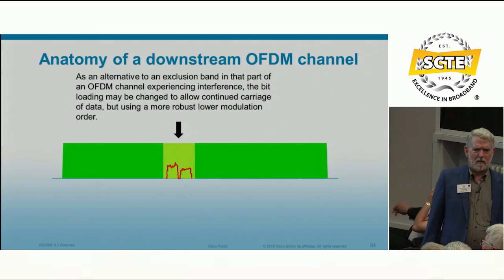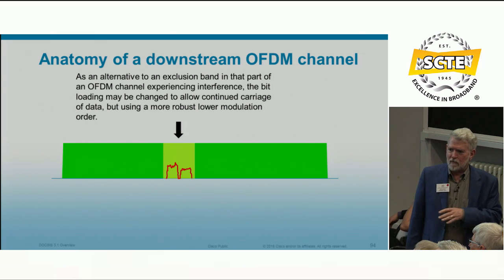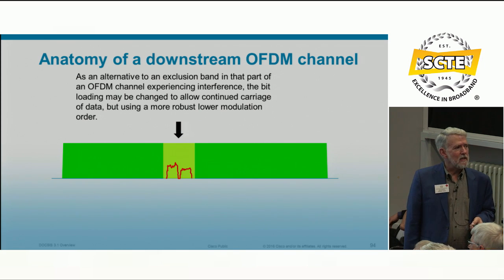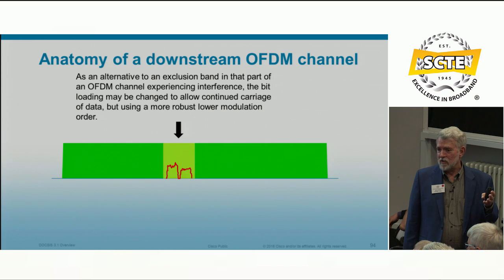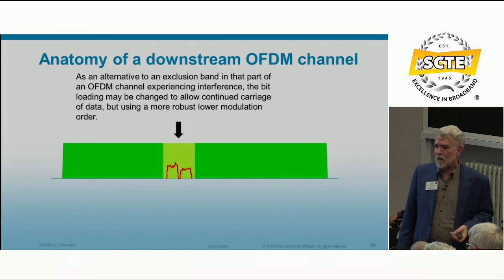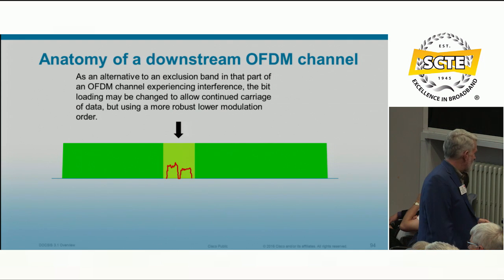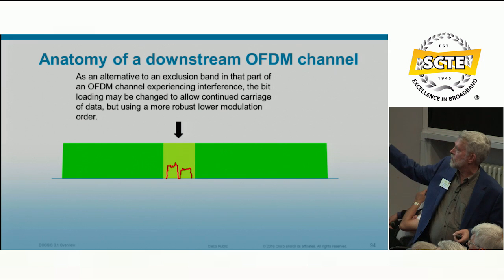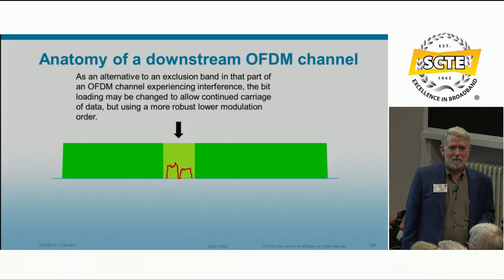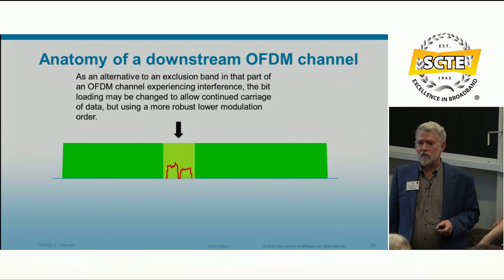Another powerful feature is bit loading — assigning different modulation orders to different groups of subcarriers. If ingress isn't severe enough to require an exclusion band, you can reduce the modulation order on the affected subcarriers — say, from 4K QAM down to 256 QAM — while the rest of the channel continues at 4K QAM. This preserves usability of that part of the spectrum rather than turning it off entirely.